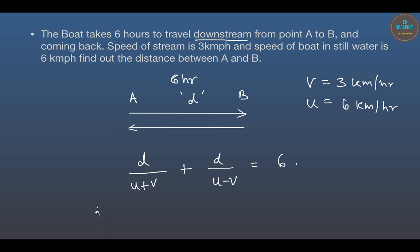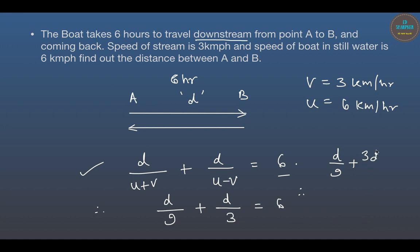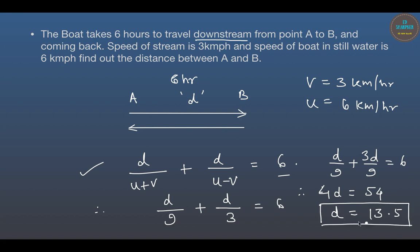Distance divided by speed always gives time — that is the basic equation. U plus V is 6 plus 3 equals 9, and U minus V is 3. So D/9 plus D/3 equals 6. Multiplying the second fraction gives D/9 plus 3D/9 equals 6, therefore 4D equals 54, and D equals 13.5 kilometers. So the distance between A and B is 13.5 kilometers.